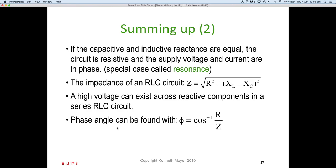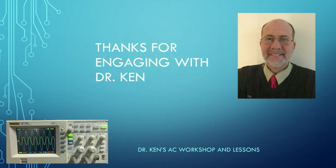Finally, the phase angle can be found with theta = cos⁻¹(R/Z). You can also use sine or tan if you have other sides of the triangle, but typically we have the resistance and the hypotenuse Z, making cosine the straightforward choice for finding the phase angle.